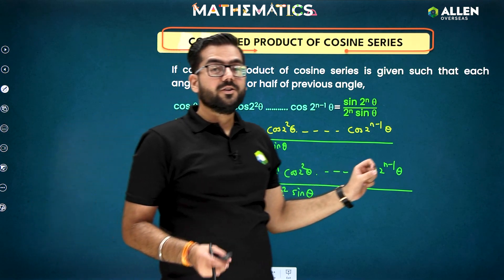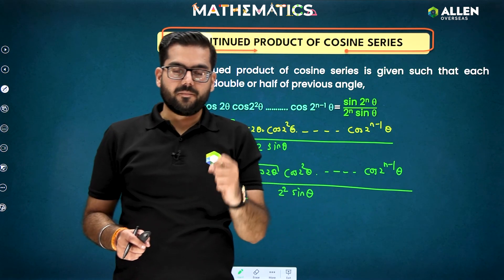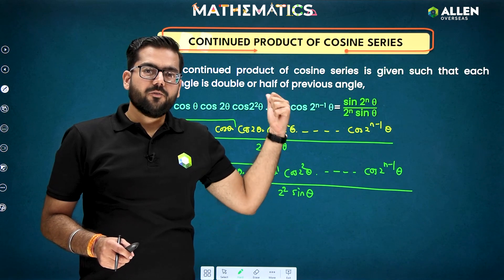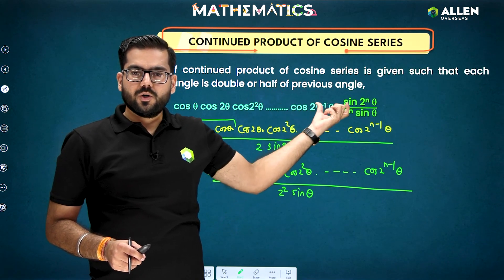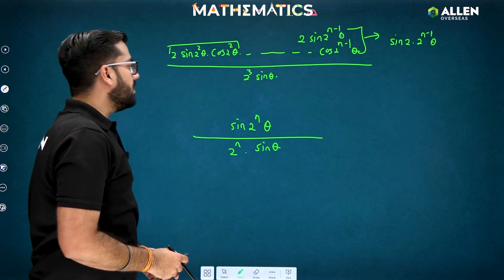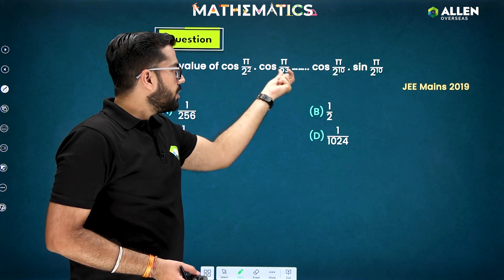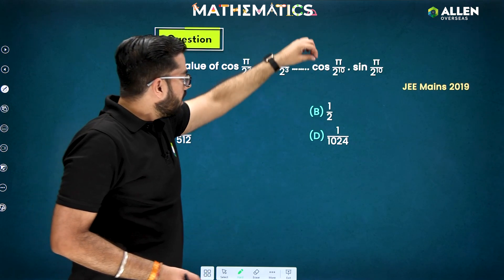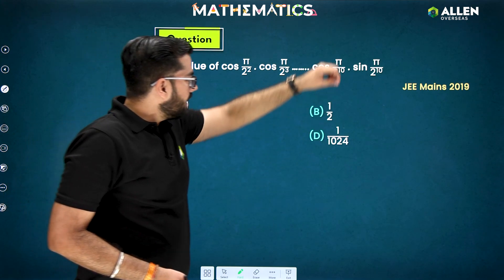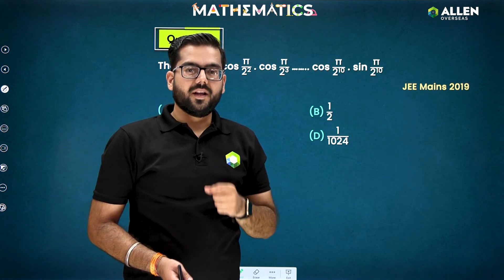If you have a cosine series, I recommend just applying the formula directly. Sometimes you need to convert your pattern first, but if you have a cos · cos · cos series or cosine pattern, prefer the formula. We have one previous year question based on this same concept: find the value of cos(π/2²) · cos(π/2³) and so on till cos(π/2^10), multiplied by sin(π/2^10). This is JEE Mains 2019.